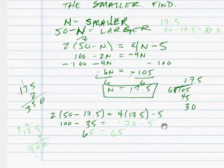Equals 4 times 17.5. So 17.5 times 4 is 70. 70 minus 5 is 65. 100 minus 35 equals 65. So our number checks and the equation is correct.